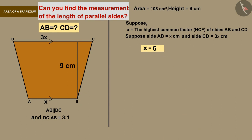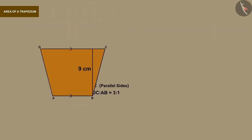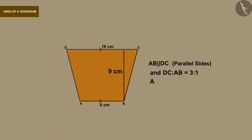Perfect. Substituting the value of x we get the value of AB as 6 centimeter and the value of CD is 18 centimeter. This is what we had to find out in this question.